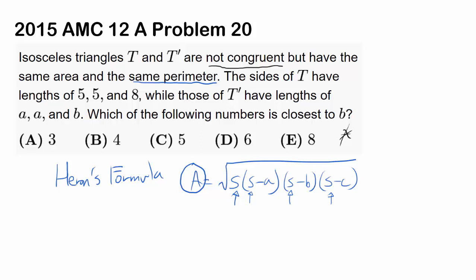And you know the area has to be the same. So what's that telling us? That's telling us this expression, S minus A times S minus B times S minus C, is the same for both triangle T and T prime. What is S for triangle T? For triangle T, our semi-perimeter is 5 plus 5 plus 8 over 2, also known as 9. So we have 9 minus 5 times 9 minus 5 times 9 minus 8.